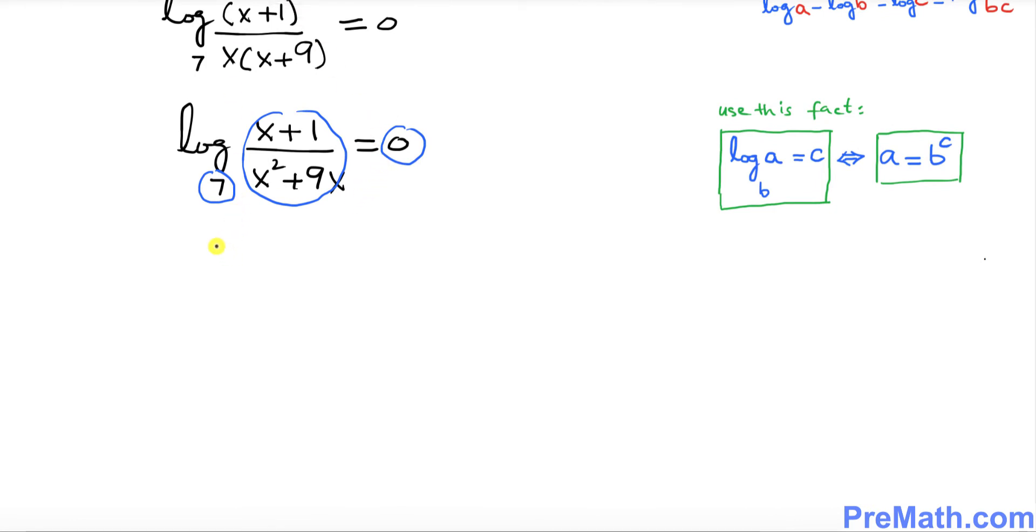We want to convert it into an exponential equation, so I can write as (x+1) over (x² + 9x) equals to 7 to the power zero.